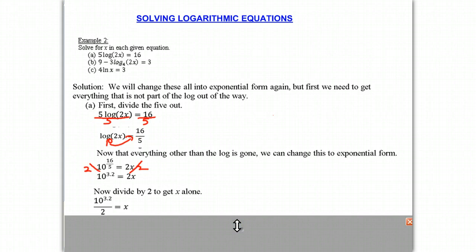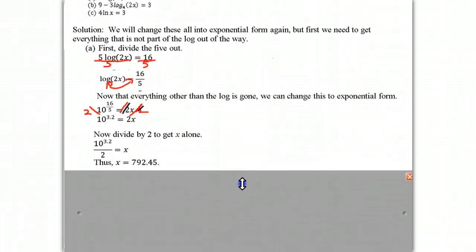Because as you notice, when you divide by 2, the 2's canceled out. I switch colors on you. And so we get 10 to the 3.2 power over 2 equals x. Well, you simply put that into your calculator, and we get our answer of 792.45.